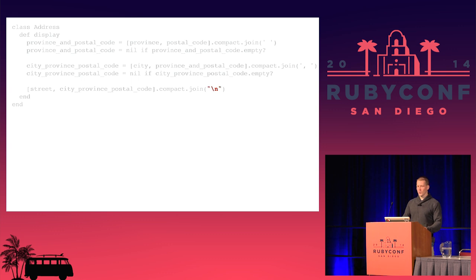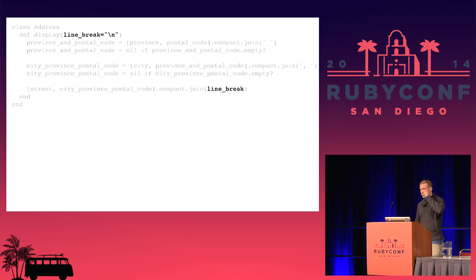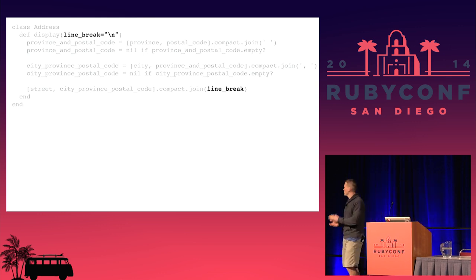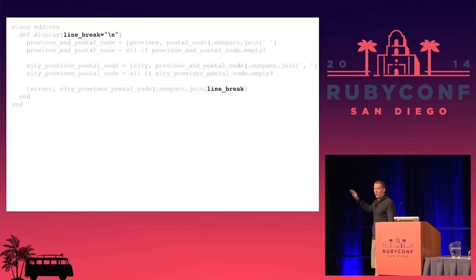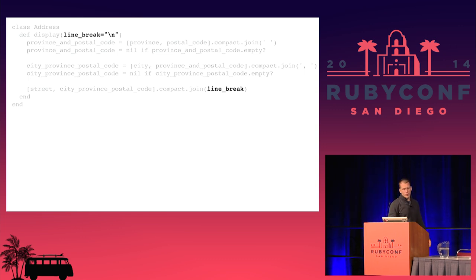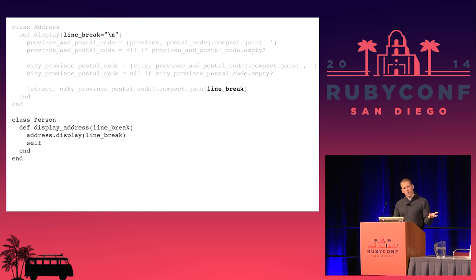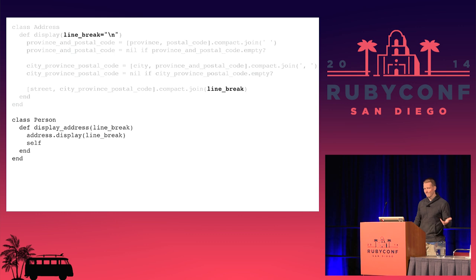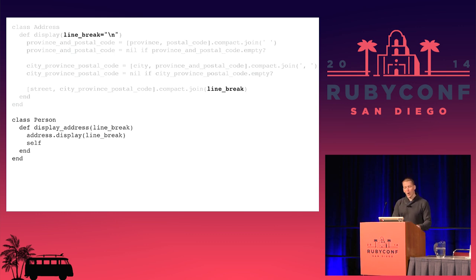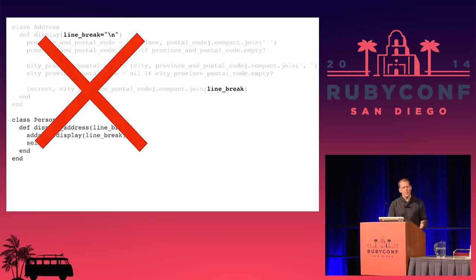But something's not right with that line break — we're working with an address and the address knows about the formatting. What if we did a different format? That doesn't really belong there. An easy way to fix it: put an argument in there for the line break. Now I can throw whatever I want in there and break it up however I like. But then person needs to know about line breaks, which doesn't seem right. And person is still returning self, so we're never going to actually see anything — we still need another object.